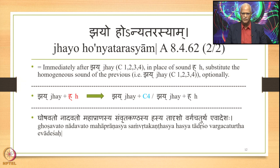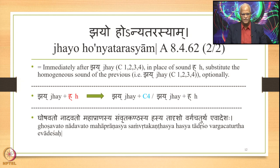So the meaning of the sutra is: immediately after Jhayah — that is columns 1, 2, 3, 4 of the class consonants — in place of sound H, substitute the homogeneous sound of the previous element, optionally. This can be expressed as an equation: Jhayah plus H is the input, and Jhayohonyatarasyam generates the output Jhayah plus the 4th class consonant, optionally.